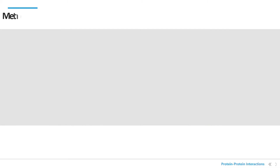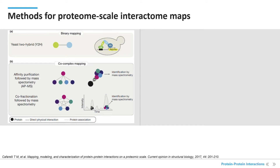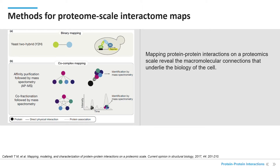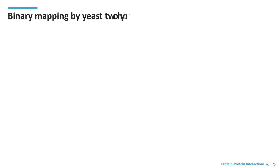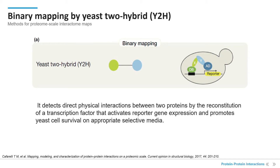Mapping protein-protein interactions on a proteomic scale reveals the macromolecular connections that underlie the biology of the cell. Although there are many methods for detecting protein-protein interactions, only a few methods are able to support high-throughput mapping. Binary mapping by yeast-2 hybrid, and co-complex associations by affinity purification followed by mass spectrometry, or co-fractionation with mass spectrometry, can be adapted to systematically survey the entire proteome. Binary mapping by yeast-2 hybrid detects direct physical interactions between two proteins by the reconstitution of a transcription factor that activates reporter gene expression and promotes yeast cell survival on appropriate selective media.